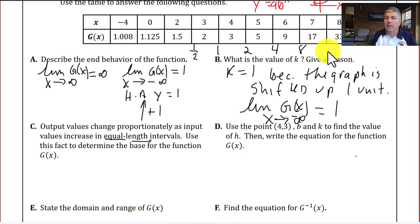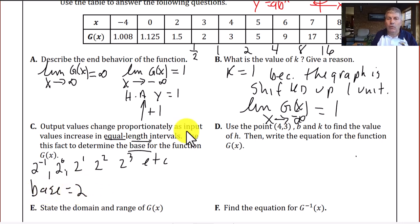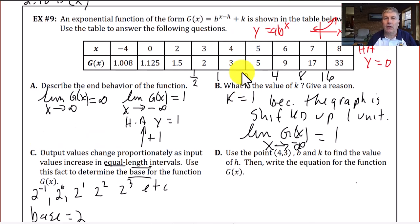So we might notice here that our increases, ½ is 2 to the negative 1st. So we've got 2 to the negative 1st, and then we've got 2 to the 0, and 2 to the 1st, 2 to the 2nd, 2 to the 3rd, etc. So the base of our function appears to be 2. So our base equals 2, and so that means in our function g of x equals b to the x minus h plus k, now we know b is 2 and we also know that k is 1.